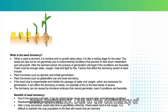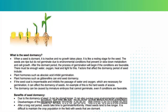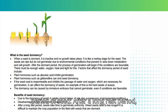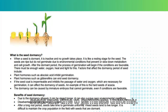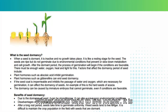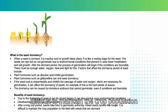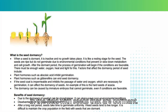Benefits of seed dormancy: due to the dormancy of seeds, they can be stored longer and can also survive poor environmental conditions. Disadvantages of the rest period of seeds: after a long rest period, seeds take time to germinate uniformly; wheat seeds tend to live longer; and it is difficult to maintain the crop population in the field with seeds that are dormant.